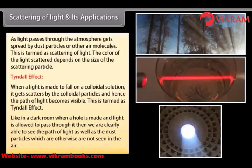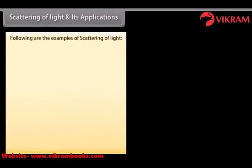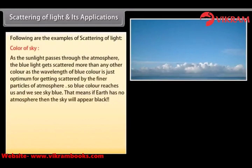Like in a dark room, when a hole is made and light is allowed to pass through it, we are clearly able to see the path of light as well as the dust particles which otherwise are not seen in the air. As sunlight passes through the atmosphere, the blue light gets scattered more than any other color, as the wavelength of blue color is just optimum for getting scattered by the finer particles of the atmosphere. So blue color reaches us and we see the sky as blue. If the earth had no atmosphere, the sky would appear black.